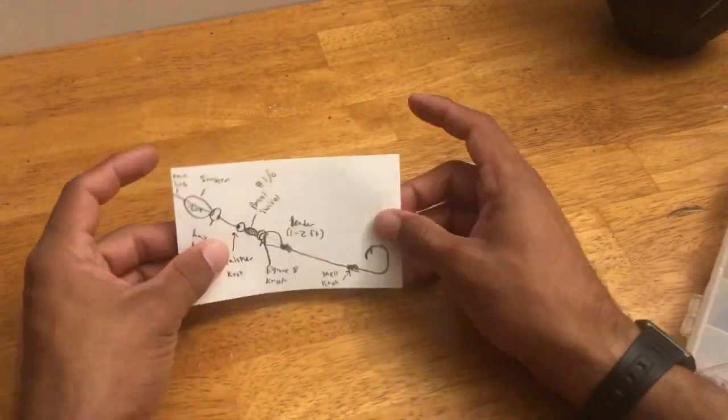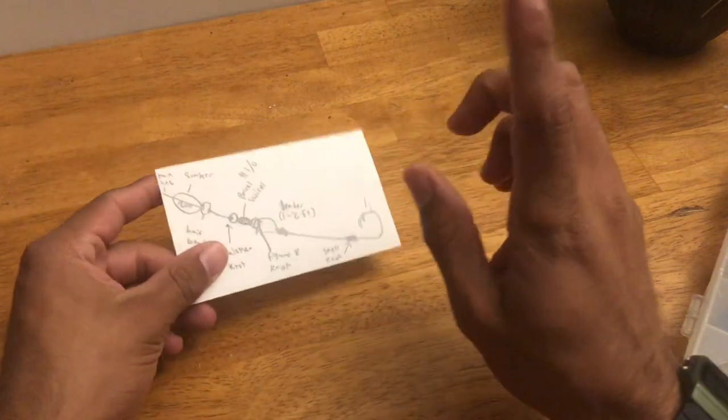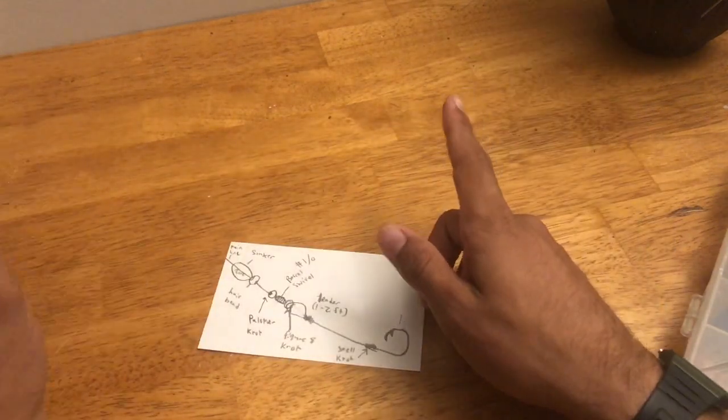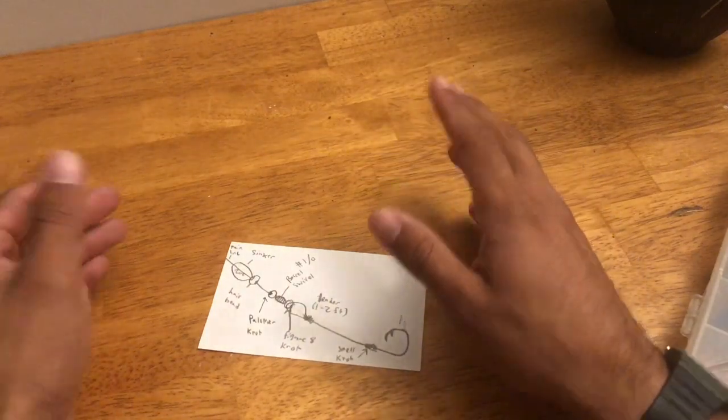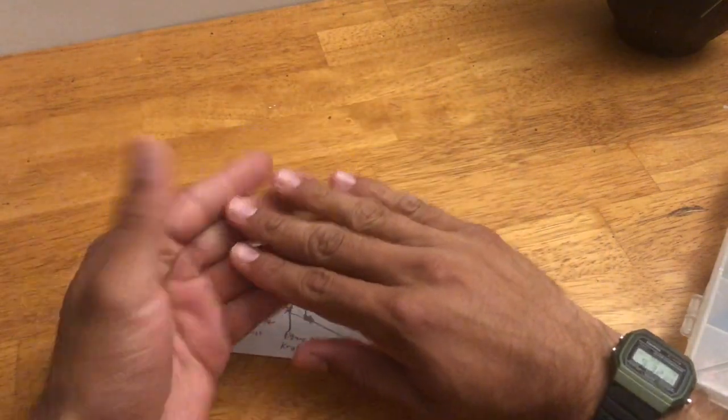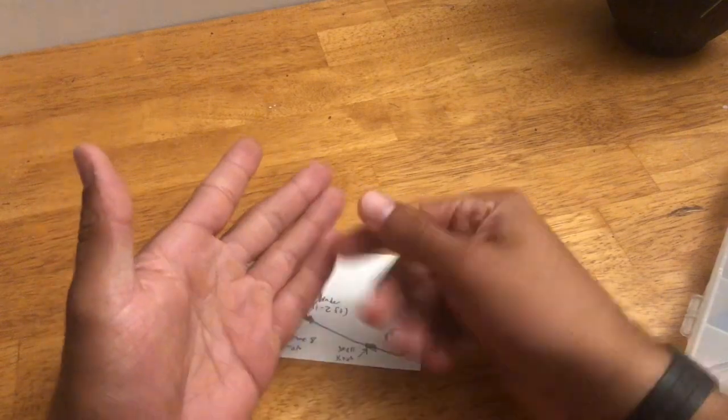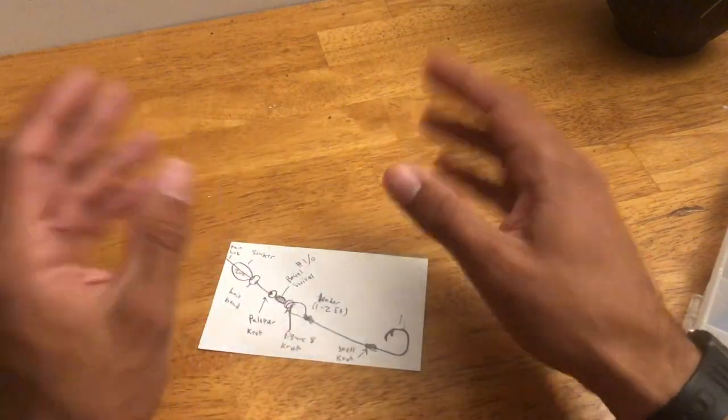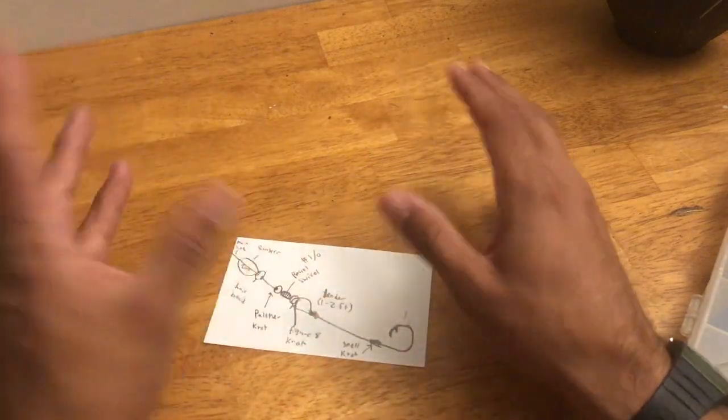The reason why you want a leader on this instead of just using your hook attached to the main line is that catfish are strong. Catfish have abrasive teeth. If you've ever caught a catfish, you know well that their teeth are like sandpaper. They'll bite and gnaw on it and twist and turn like an alligator. And if they're on a rocky bottom or there's obstacles, debris, or rocks, they'll smash right into that and tug your line.